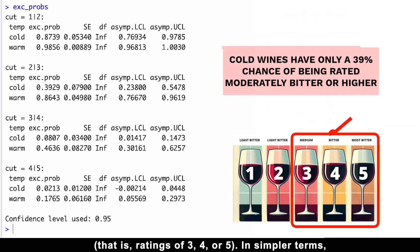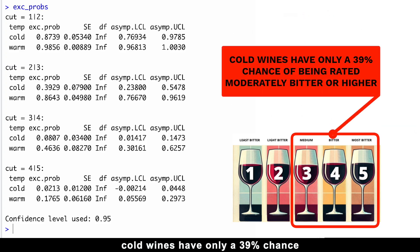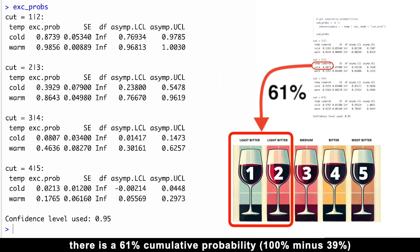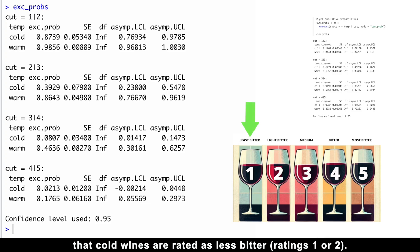In simpler terms, cold wines have only a 39% chance of being rated moderately bitter or higher. Conversely, there is a 61% cumulative probability that cold wines are rated as less bitter, namely, ratings 1 or 2.